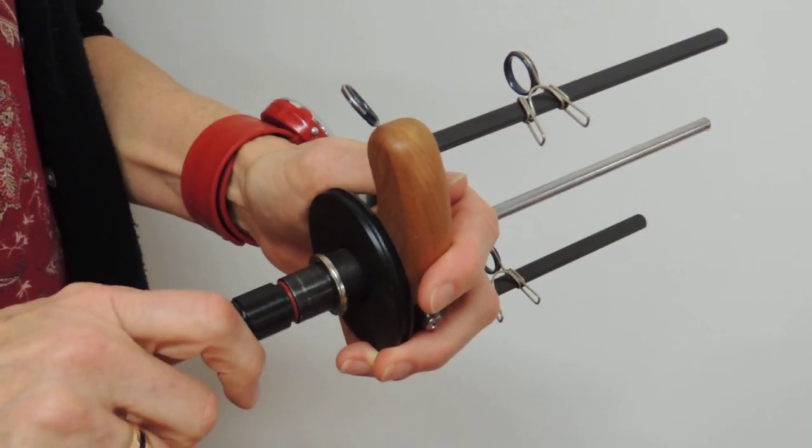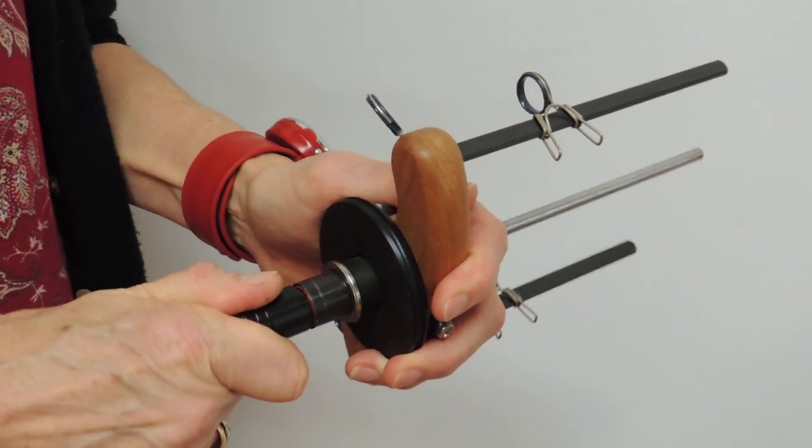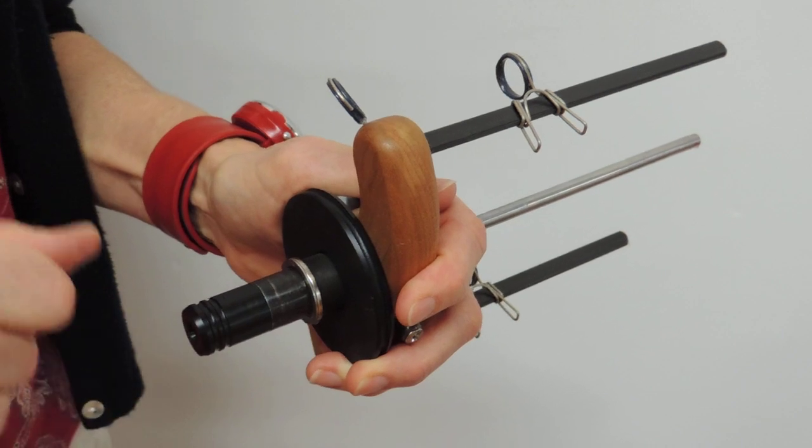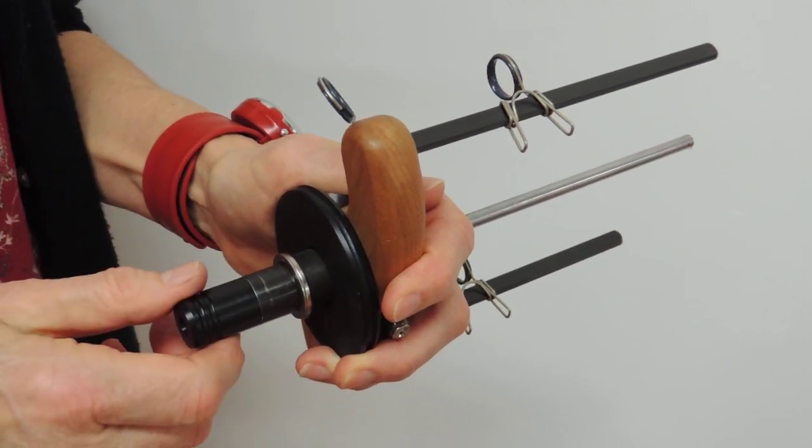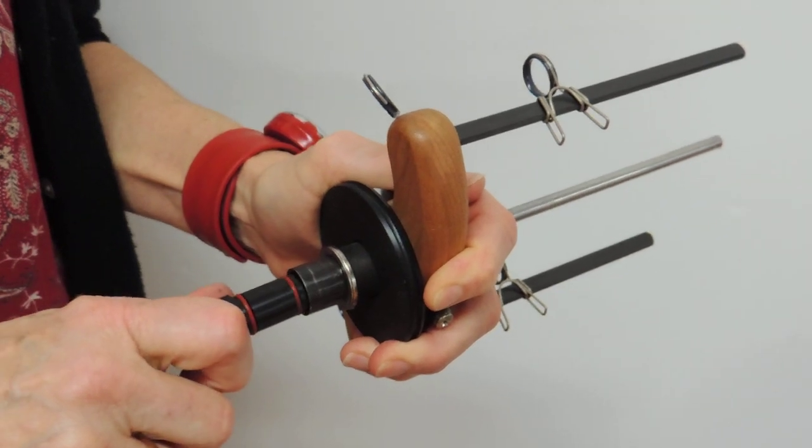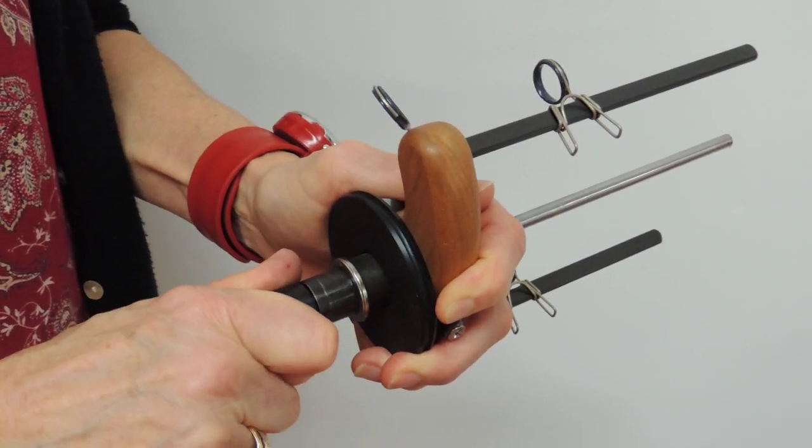So when you put your orifice reducer in you want to give it a twist and push it that last little bit and you will definitely feel it connect with the neck of the orifice. To remove it, the same thing, twist and pull it out.